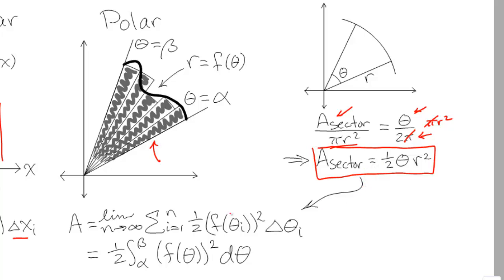Bringing this into the formula, for each individual sector, the radius r is determined by f of theta — r equals f of theta is our polar curve. So we have one half f of theta squared, which is the r squared, times the angle. Each individual sector has an angle of delta theta. When we add these all together and take the limit as the number of sectors goes to infinity, this gives us our integral for area: one half the integral from alpha to beta, where alpha is the starting angle and beta is the ending angle, of f of theta squared d theta.